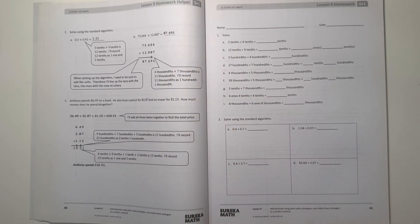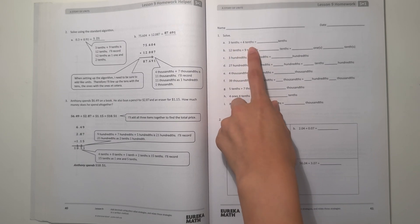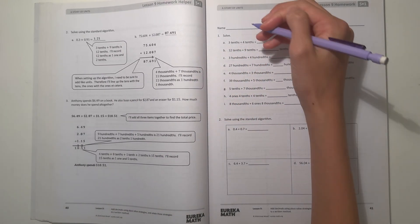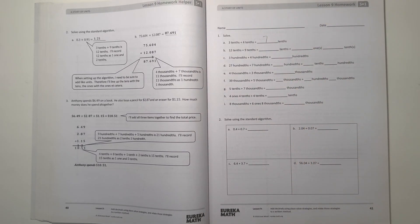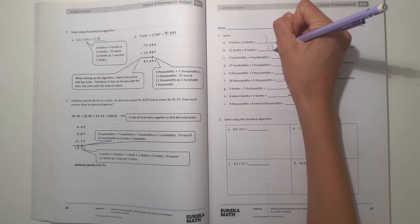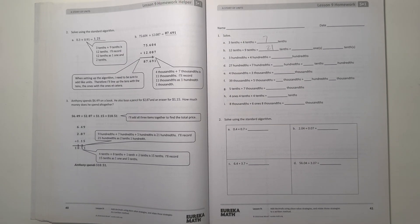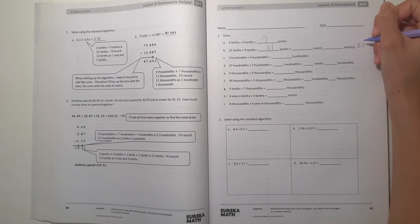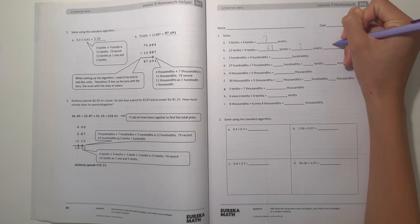Number 1, solve. Alright, so A, we have 3 tenths plus 4 tenths. 3 plus 4 is 7, so our answer would be 7 tenths. And B, we have 12 tenths plus 9 tenths. 12 plus 9 is 21, so our answer is 21 tenths. And 21 tenths will be written like 2.1, and this number has 2 ones and 1 tenth.